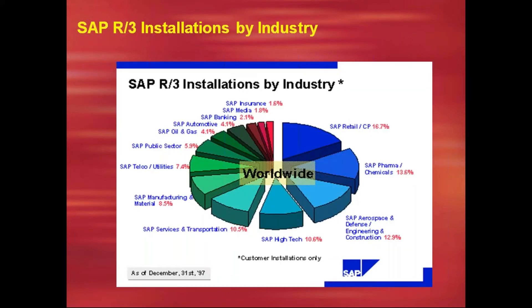SAP is installed across many industries: insurance, media, banking, automotive, oil and gas, public sector, telecommunications, utilities, manufacturing, materials, services, transportation, retail, consumer products, pharma, chemical, aerospace, defense, engineering, construction, high technologies, and more.